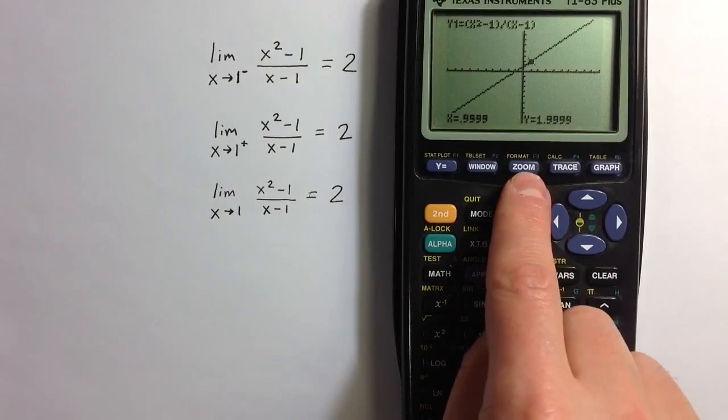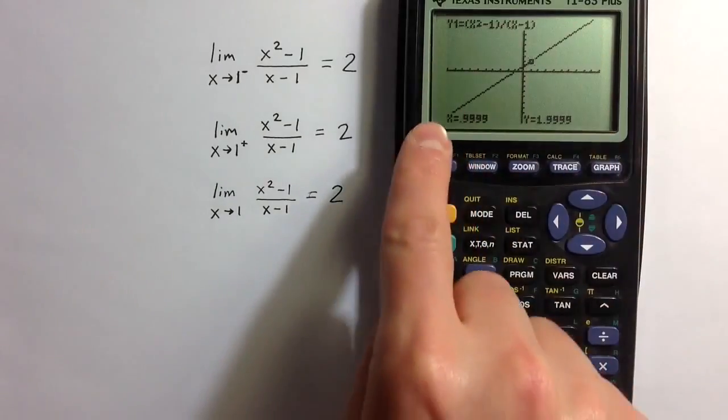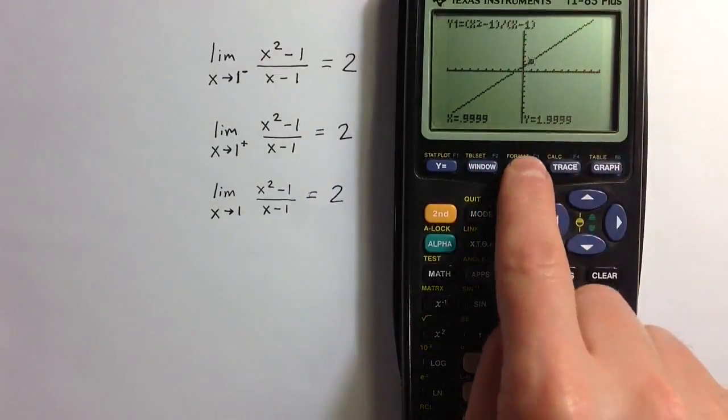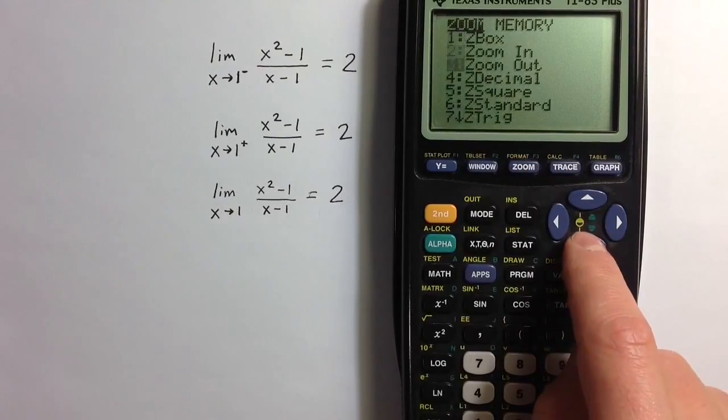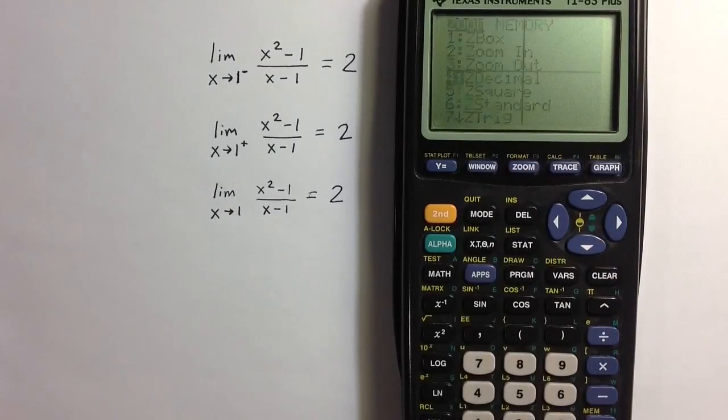Another zoom setting, this is the standard window that goes from negative 10 to 10, negative 10 to 10. Another nice kind of zoom setting here, the decimal zoom. Let me select that.